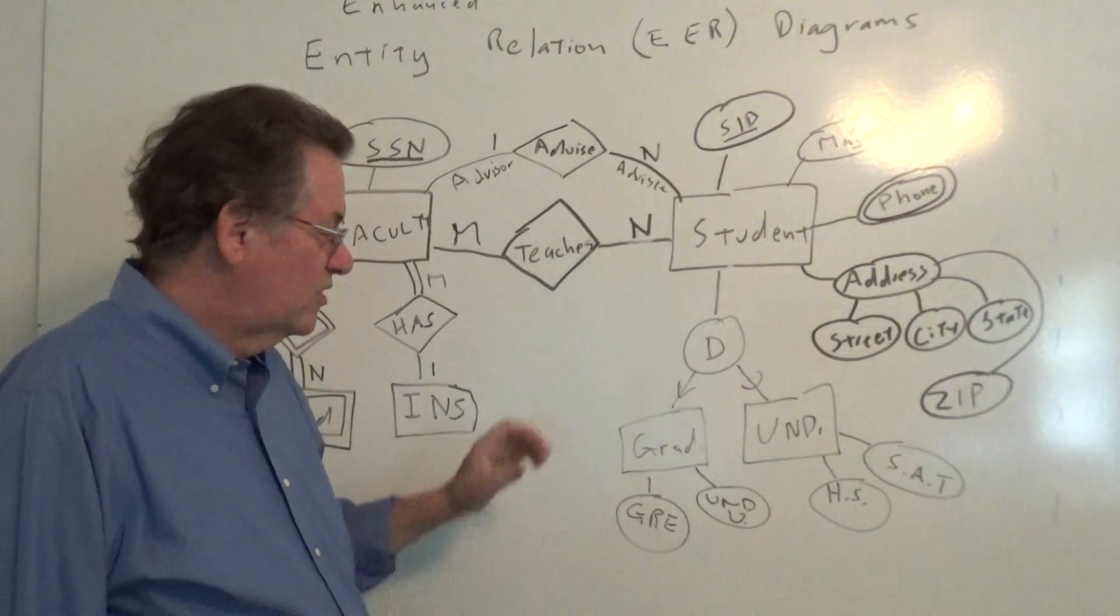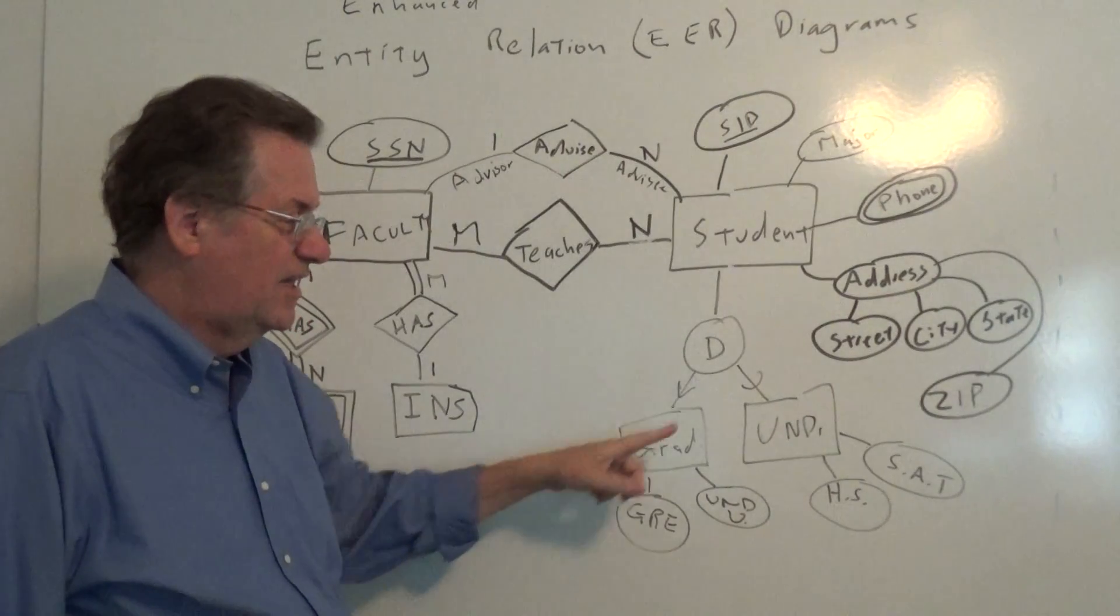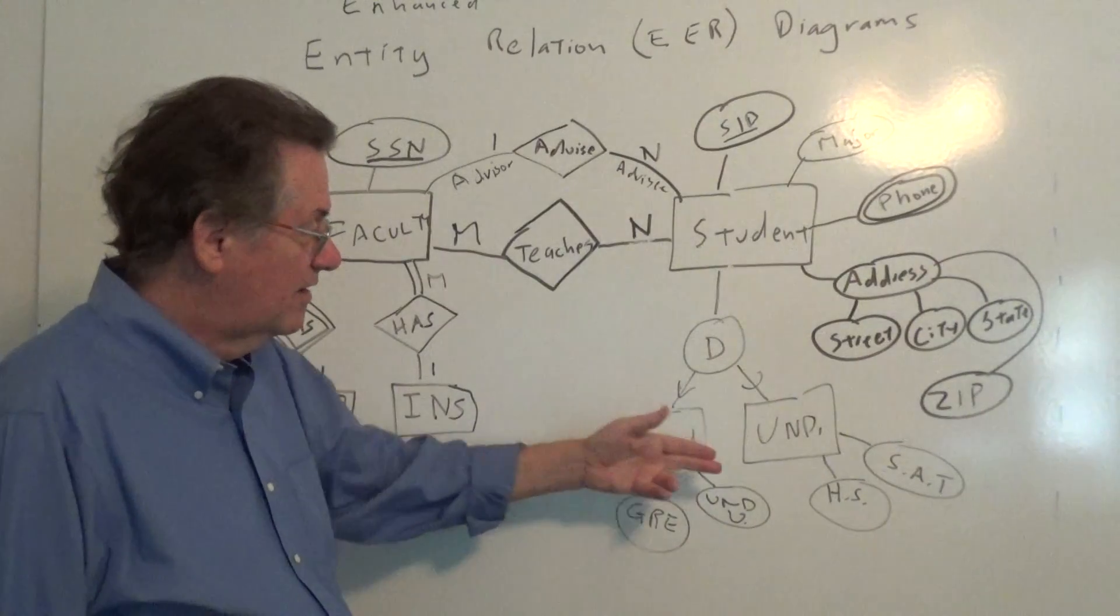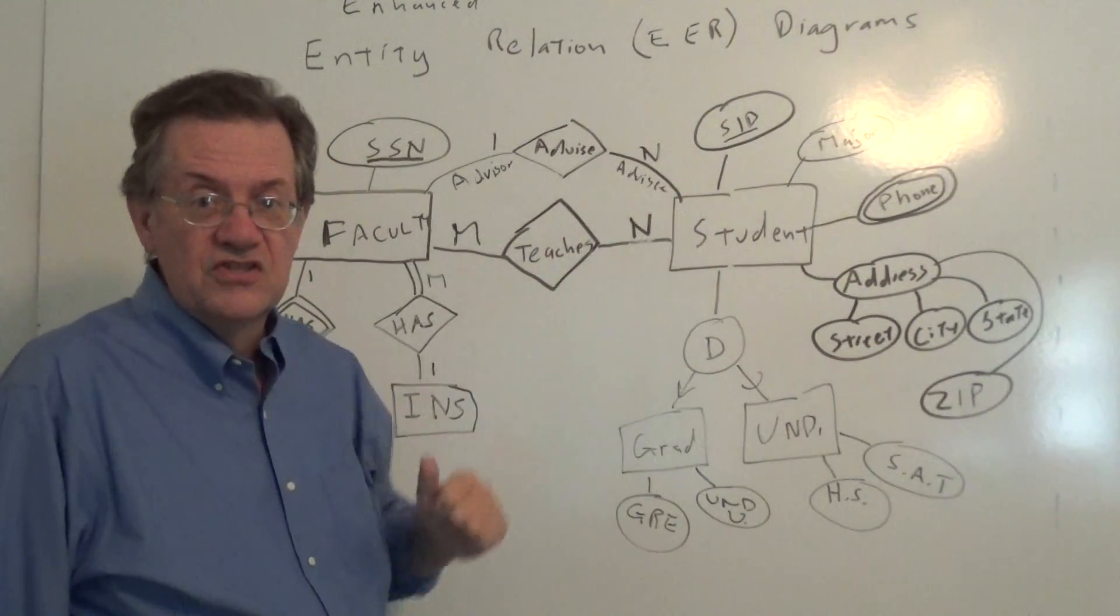And then those attributes that are common, we'd put there. Things we would not want to do, we would not want to put like student ID here or student ID there. If we're doing that, then we realize, well, wait a second, that's common here, common here. Let's push it up to the super class.